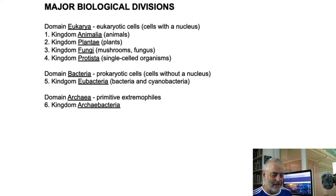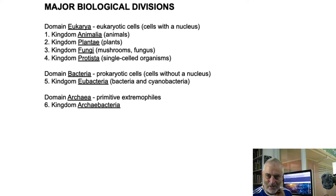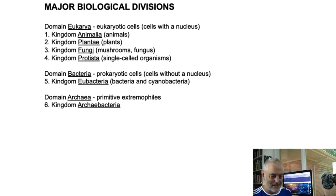It gets complicated because sometimes we don't even preserve the fossils well. We're going to talk about fossil preservation as well. So to recap: domain, kingdom, phylum, class, order, family, genus, and species — that's the classification scheme we have. And of course the binomen, which is the genus and species.